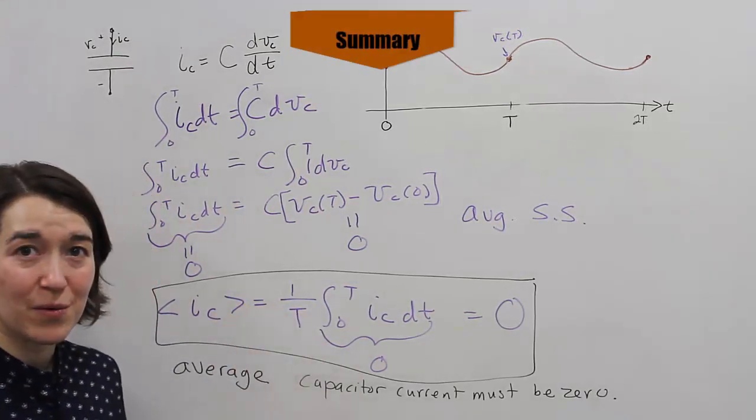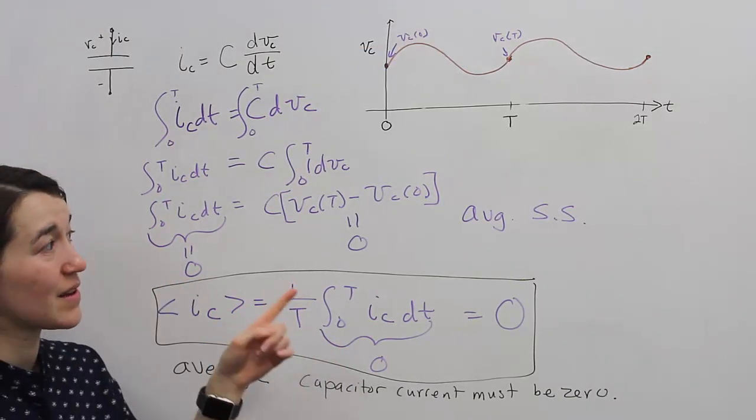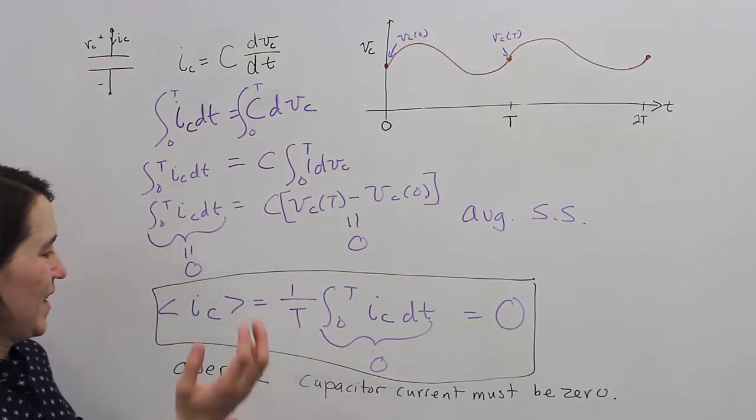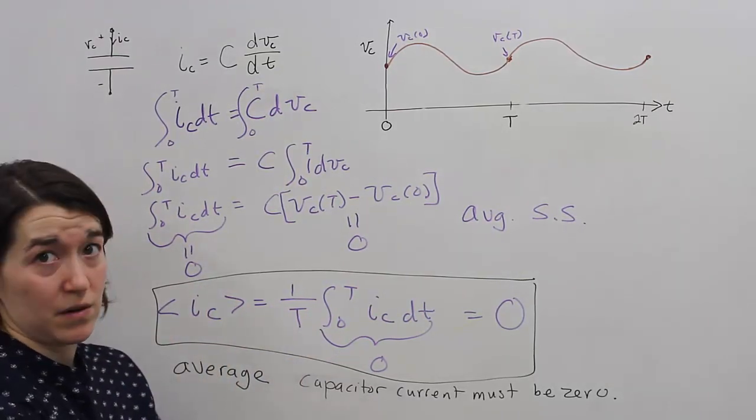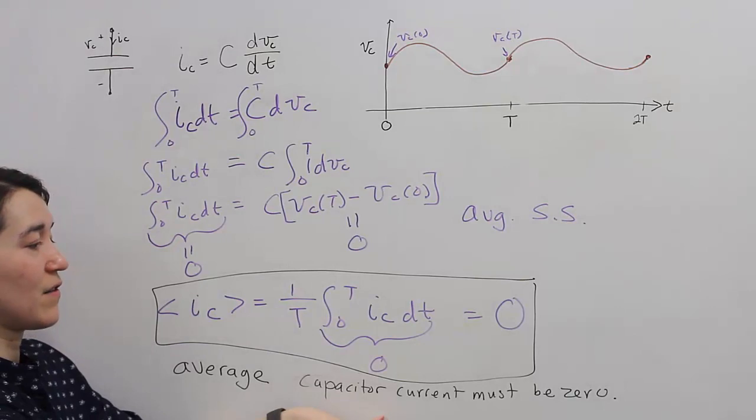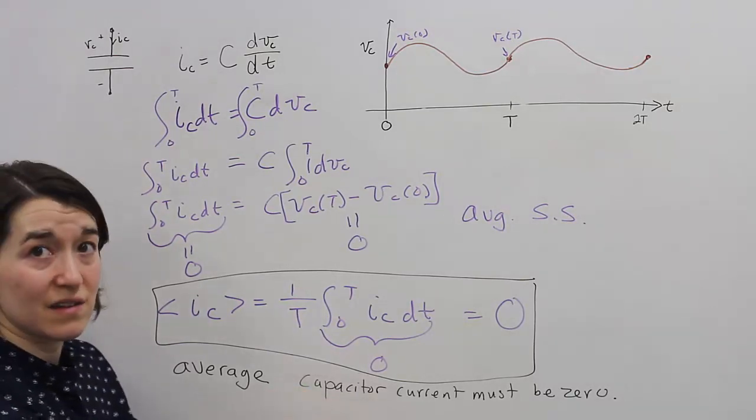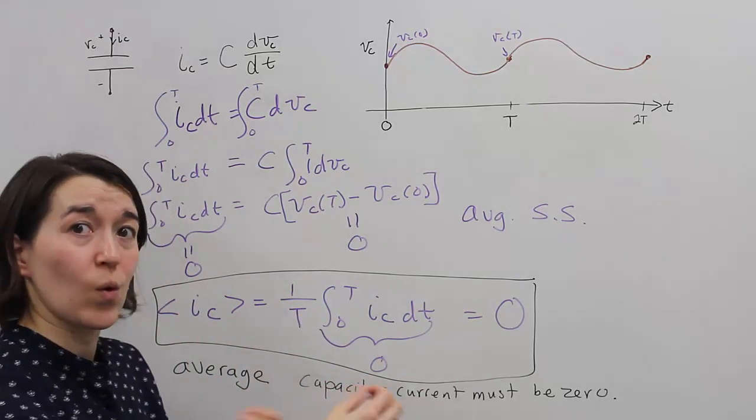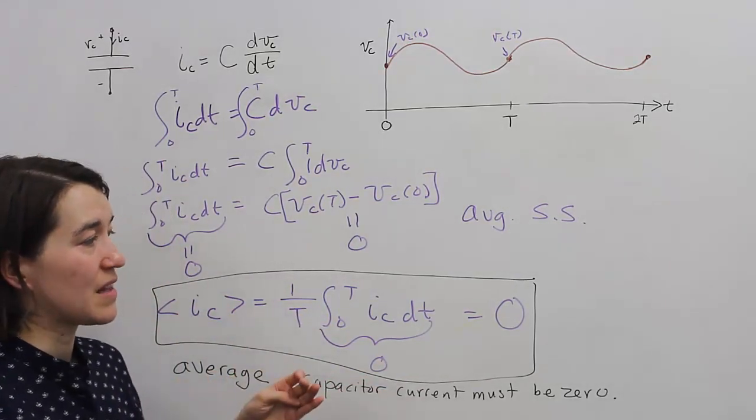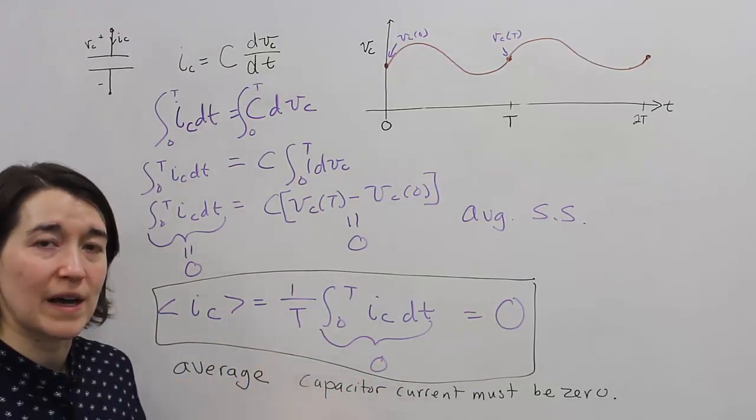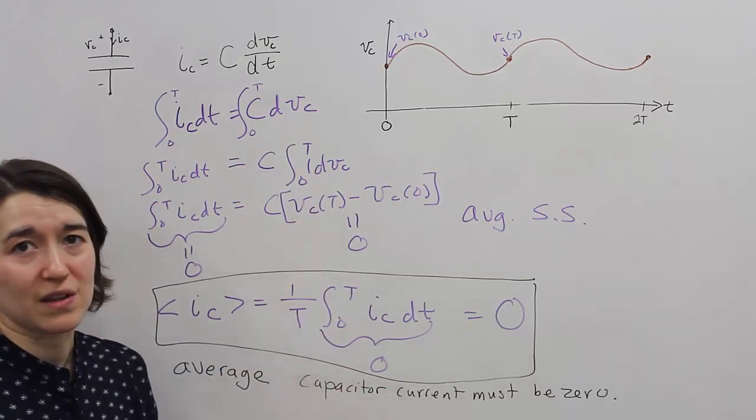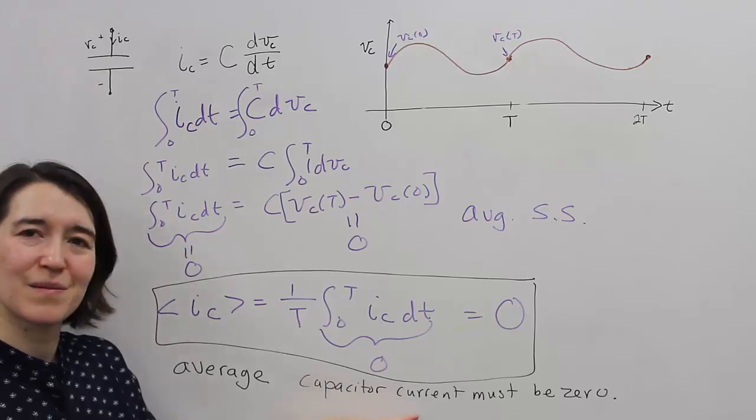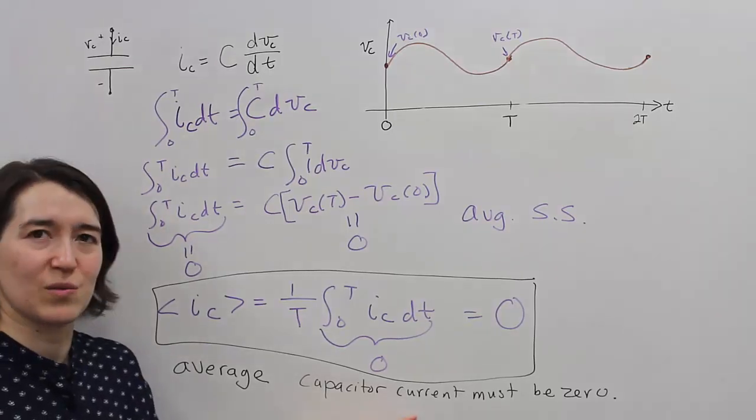The important part to remember is that in systems that are average steady state, most of the ones that we work with, the average capacitor current must be 0. If the average capacitor current is not 0, or you're putting more charge in than you're taking out, or the opposite, it means that the voltage in the capacitor will be increasing or decreasing. And this would be considered a transient in the system. So, for nice stable systems, you want the average capacitor current to be 0.